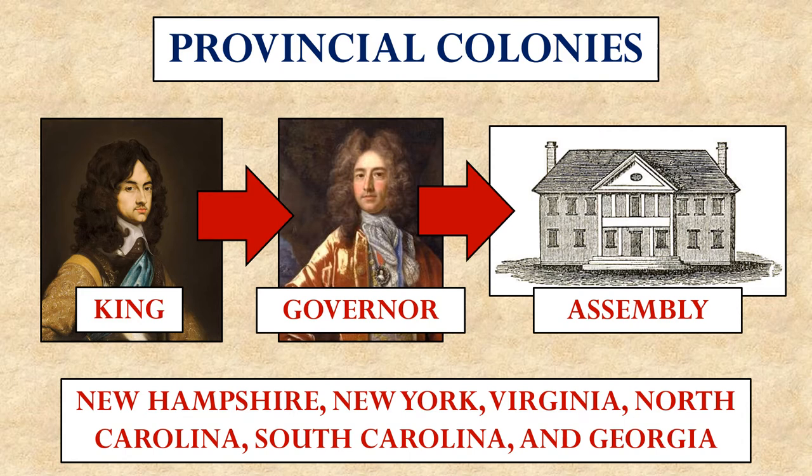Some colonies that had this structure through much of their history are New Hampshire, New York, Virginia, North Carolina, South Carolina, and Georgia. Some colonies would change the nature of their government during their history.